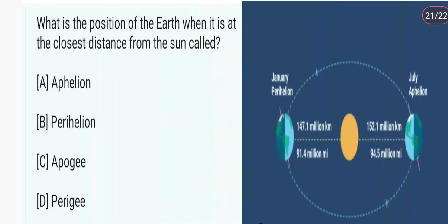What is the position of Earth when it is at the closest distance from the sun? Closest distance pe Earth ki position hoti hai perihelion. Perihelion 3 January ko hota hai. Jab sabse dur hota hai to aphelion — 4 July ko hota hai. Perigee tab hota hai jab Chandrama aur Earth sabse najdik hote hain, aur apogee jab sabse dur hote hain.